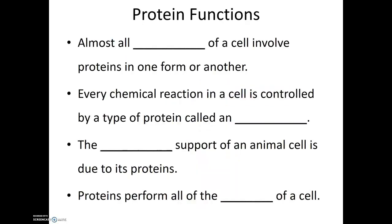So what is it that proteins do? Almost all functions of a cell involve proteins in one form or another. Every chemical reaction in a cell is controlled by a type of protein called an enzyme. These enzymes are very important. Life would not be able to proceed as we know it without these enzymes. And so if proteins were only enzymes, that would make them one of the most important types of molecules in the cell. Yet they do even more things than just functioning as enzymes.